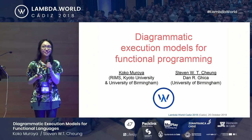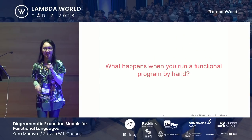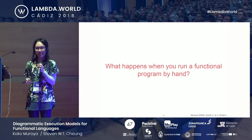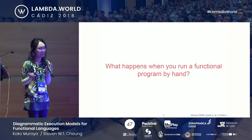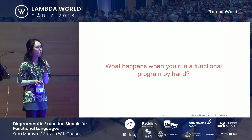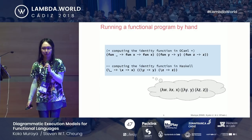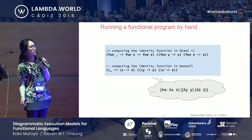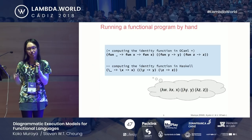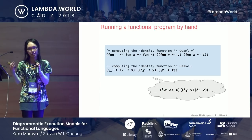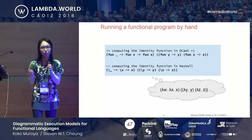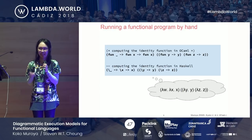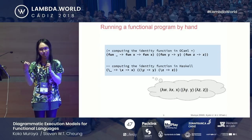Let me start with this question: what happens if you have to run a program by hand, not relying on your runtime? Think about this program — I wrote the same program in different languages. This is essentially a program that gives you back the identity function, shown in OCaml and Haskell.